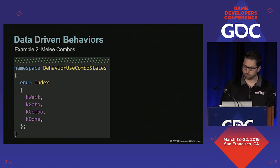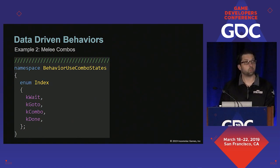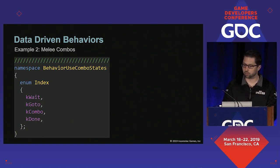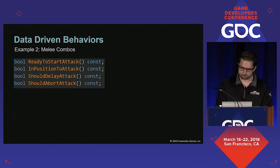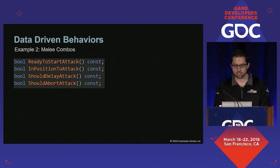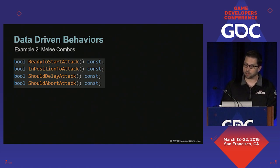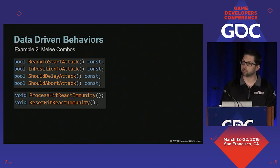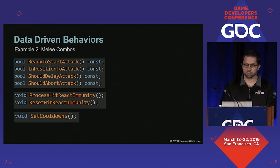Let's briefly look at behavior use combo. It's really just a state machine — it can choose to wait to perform an attack, it can go to its target, it can perform a combo move, and at some point it will end. It has its own functions for determining what state it should be in based on the data in the move container, and it also does things for us like setting hit react immunities while the attack is active or starting cooldowns at the correct time.